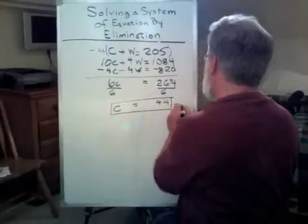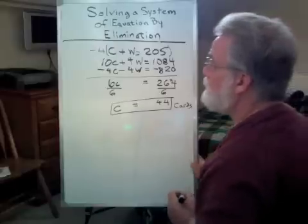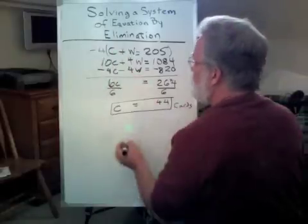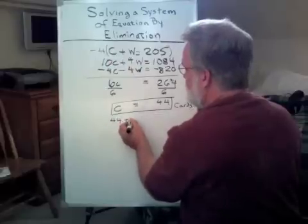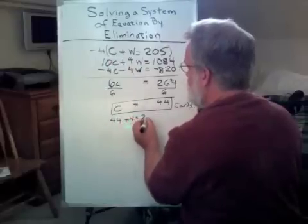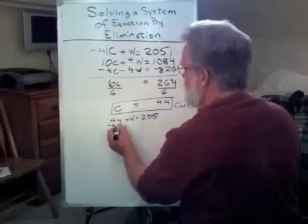Now I need to find the amount of wrap that I sold. To find that, let's go right back here. That would be 44, that's the C, plus W equals 205. I'm going to subtract 44 from both sides.